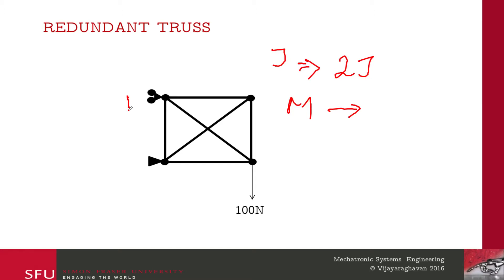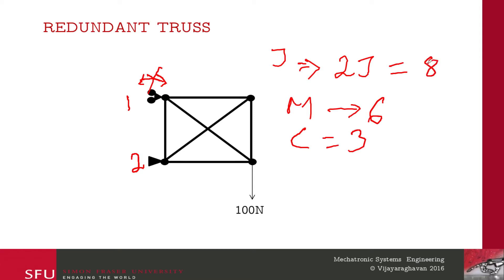The number of links m represents the unknowns. We have one constraint here because I'm preventing movement in the x direction - not allowing this link to move in this direction. This is going to be two constraints. So the number of links is six, constraints is three, giving 2j = 8 equilibrium equations, but nine unknowns - meaning we're short of one equation.